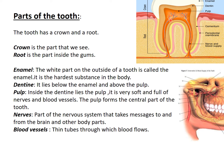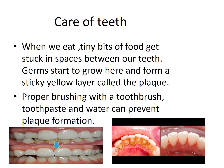Nerves are part of the nervous system that take messages to and from the brain to other parts of the body. Blood vessels are thin tubes through which blood flows.